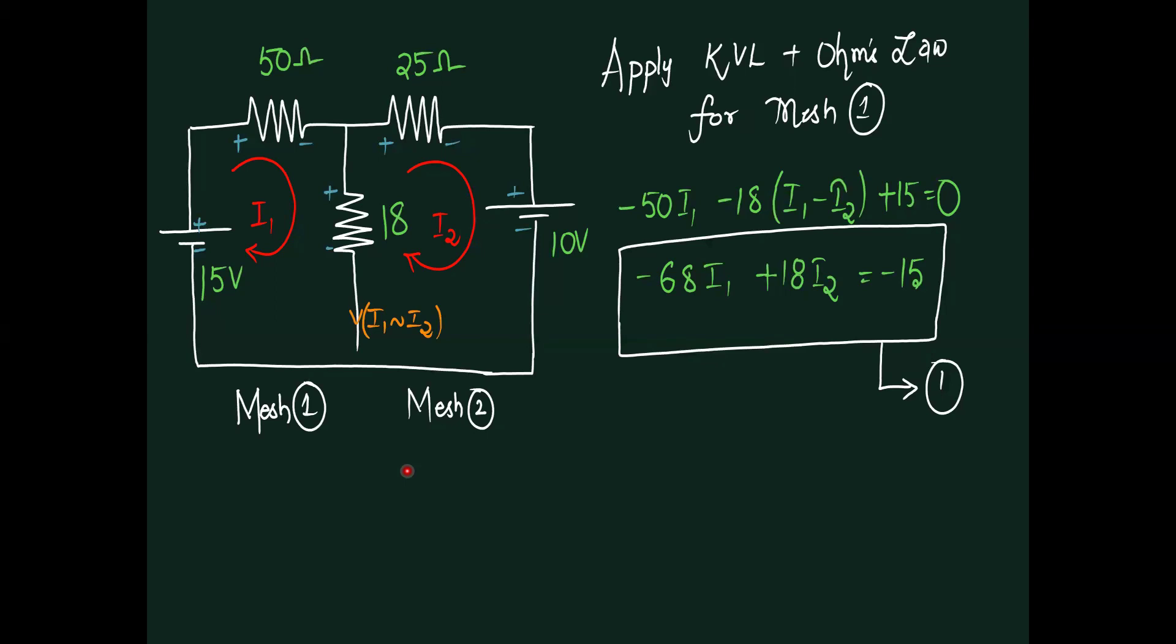This is an example I have chosen to go for both theoretical and practical. We have chosen 50 ohms, 25 ohms, 18 ohms, and we are having two sources: 15 volts voltage source and 10 volts voltage source. Our intention is to calculate current across this particular 18 ohm resistor.